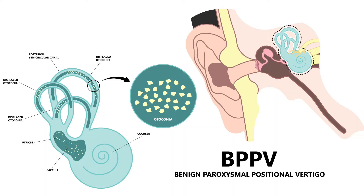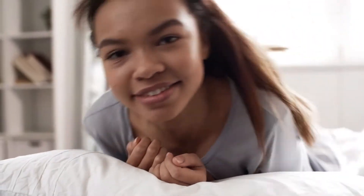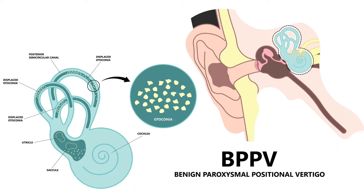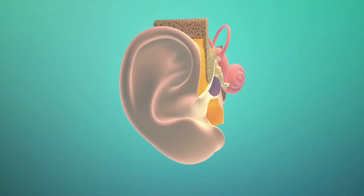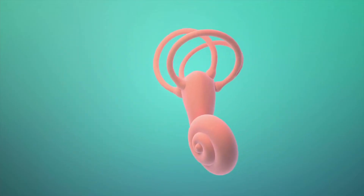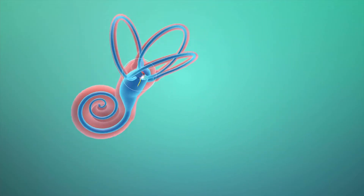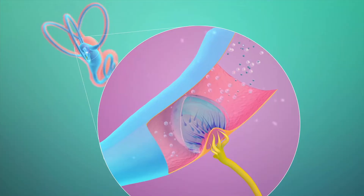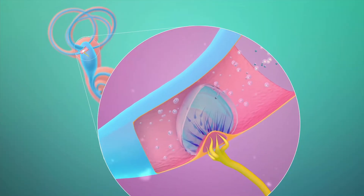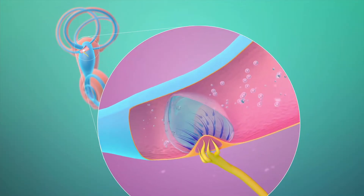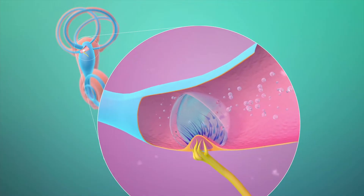BPPV stands for benign paroxysmal positional vertigo, which as the name implies is the feeling of spinning that comes on suddenly from certain head positions. It's called benign because it's not life-threatening or progressive, even though it is intense and debilitating. It's caused when particles in the inner ear called otoconia come loose and enter one of the inner ear canals — a fluid-filled canal that helps our brain process head movement — causing a false sensation of spinning.